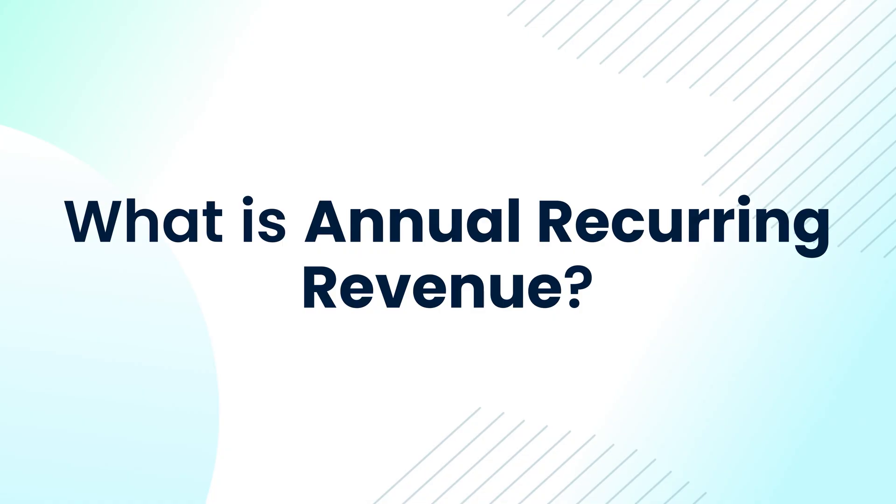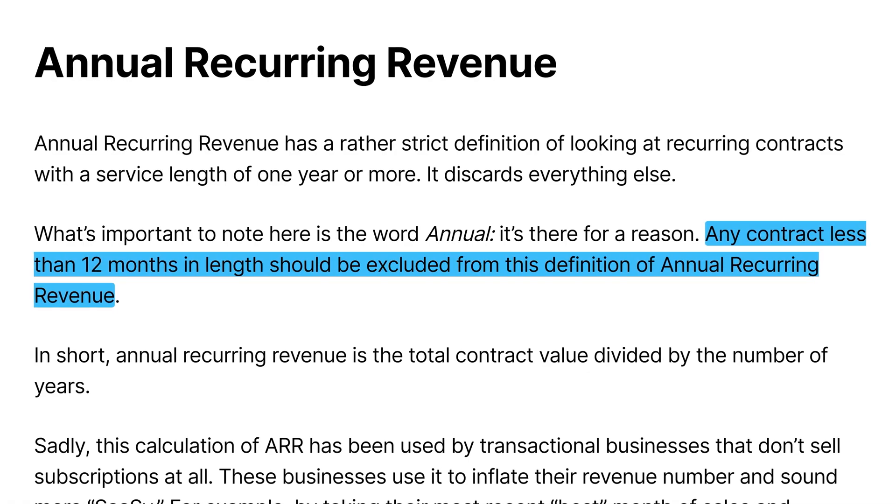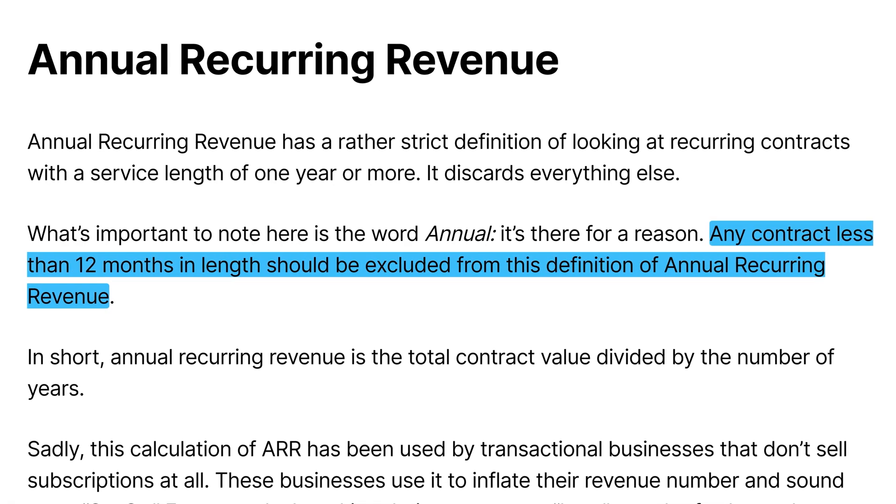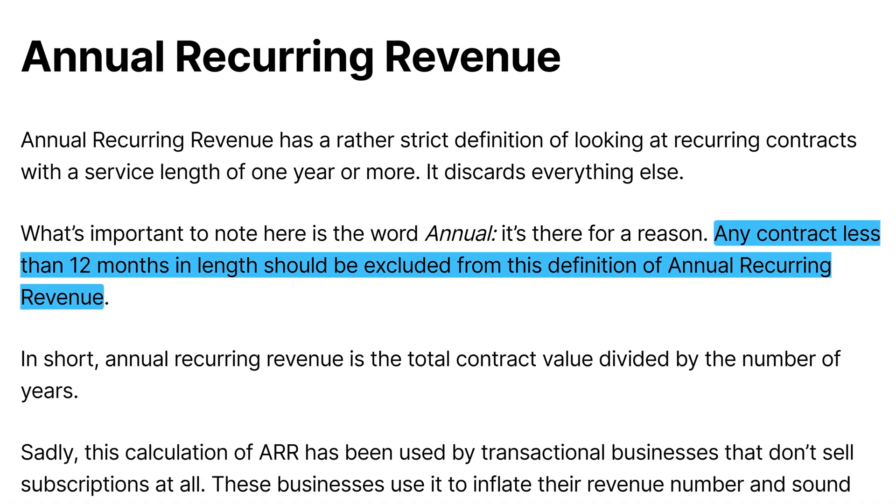What about annual recurring revenue? This is the older metric, used less day-to-day. But if you are an enterprise SaaS business that has all or mostly annual contracts, then this is a good metric — it really does mean how much annual revenue you have that is recurring. Annual recurring revenue, if you have a mix of monthly, quarterly, and annual subscribers, will be lower than annualized run rate because annual recurring revenue, per its definition, excludes non-annual customers.